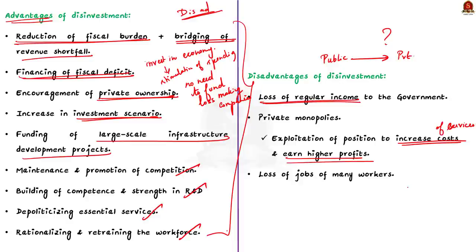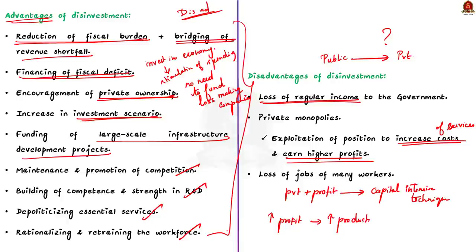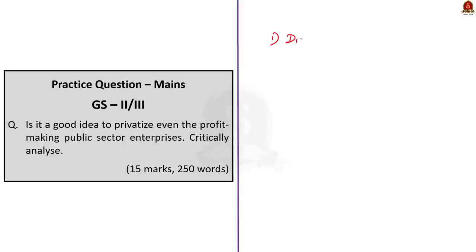These are the three major disadvantages of disinvestment. With this we have come to the end of this article discussion. We saw what disinvestment is, different types of it, different ways in which government disinvests government-owned companies, and the advantages and disadvantages of disinvestment. With these points, let us move on to the next article discussion.